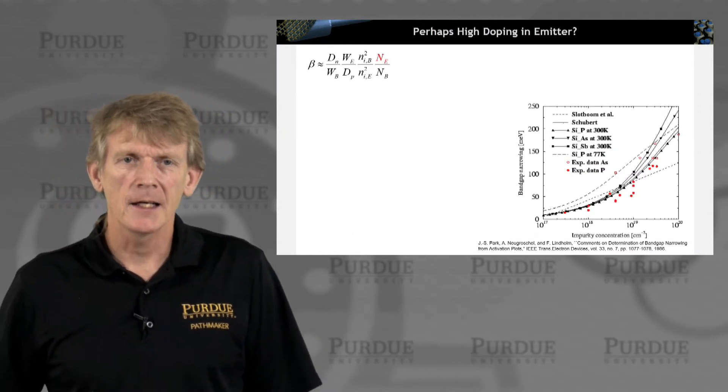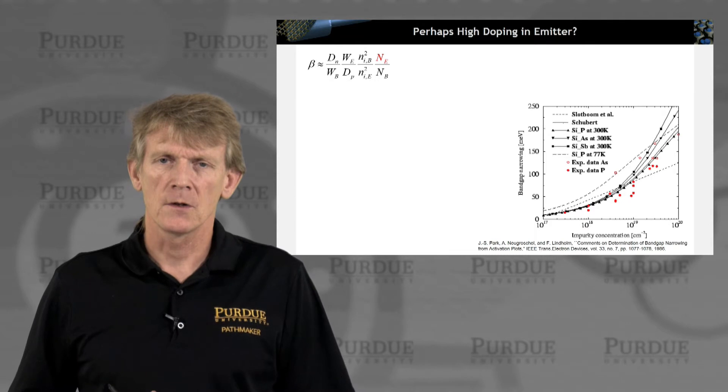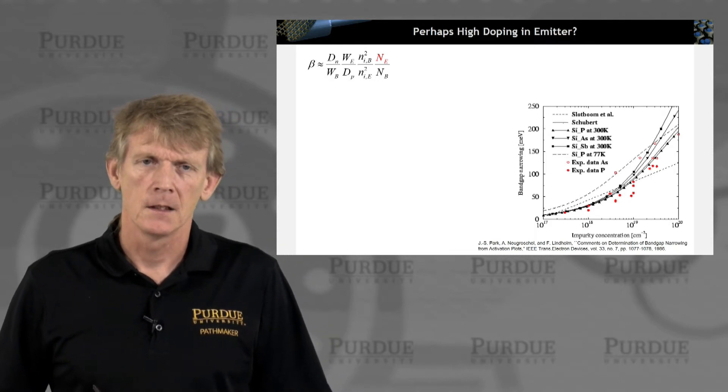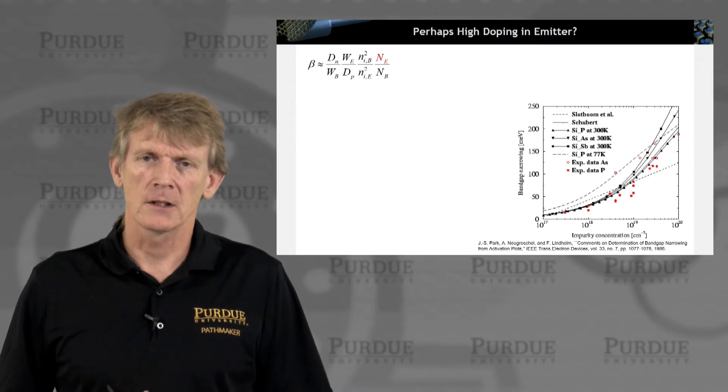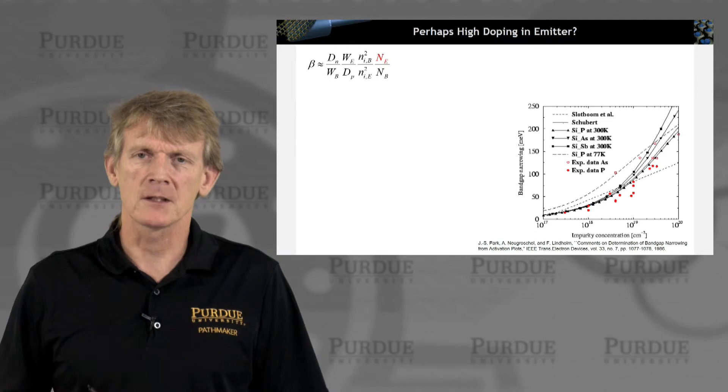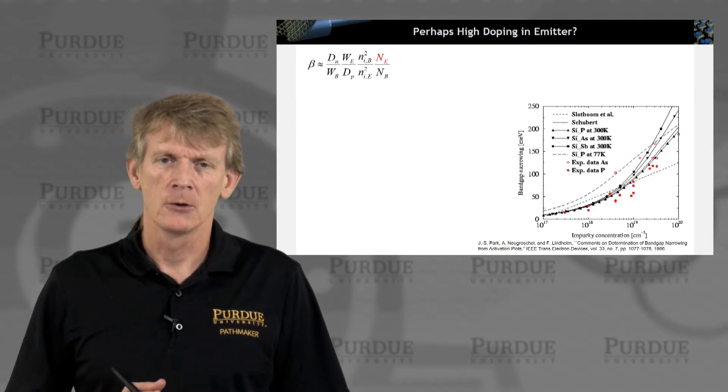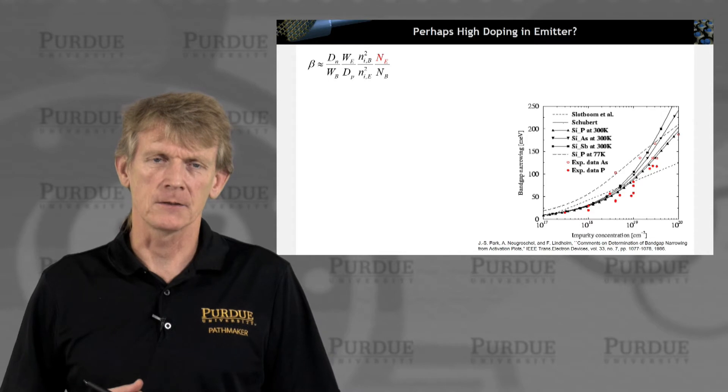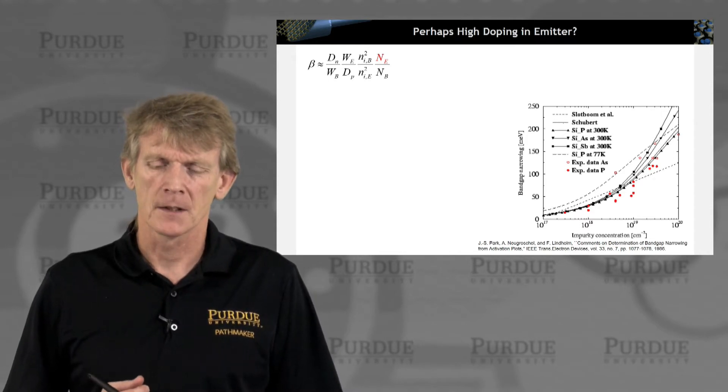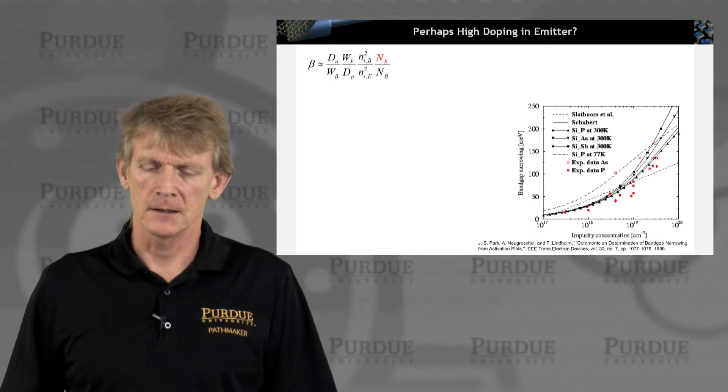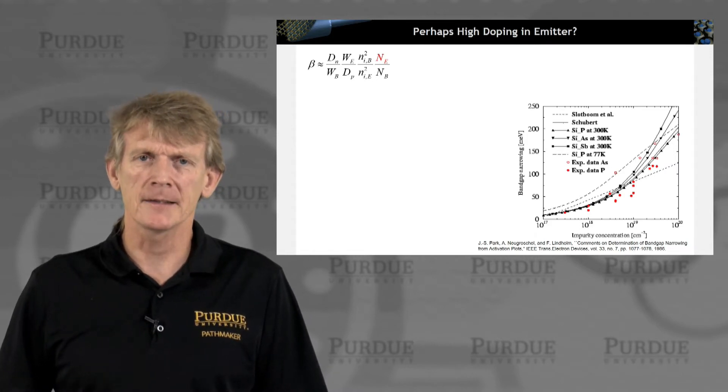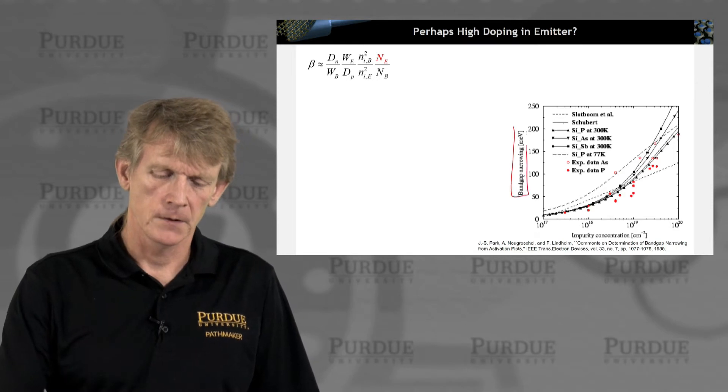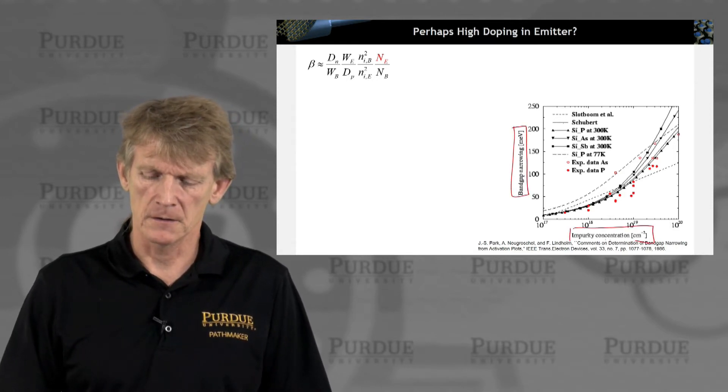As you go to higher doping, your band gap actually changes. That's a rather complicated many-body effect, but you can measure it experimentally for sure, and there's a whole crew of people who study this theoretically to express it and explain it. That's not the topic of this course, but you can pull up experimental data and a couple of models, and here is a plot of the band gap narrowing as a function of impurity concentration here.